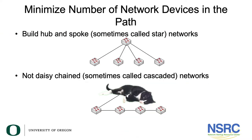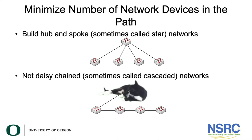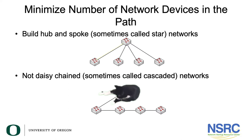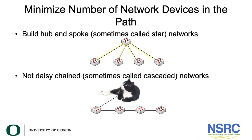The first rule: minimize the number of network devices in the path. We want you to build hub and spoke networks, sometimes called star networks — you can see this in the top diagram, where you have an aggregation device and every other device in the network is connected directly to that.